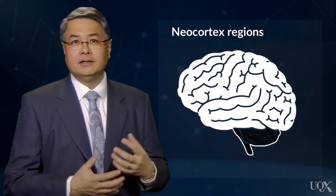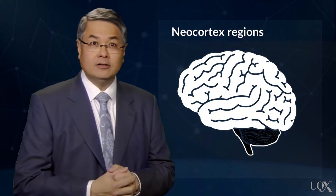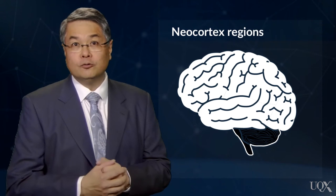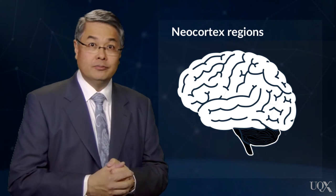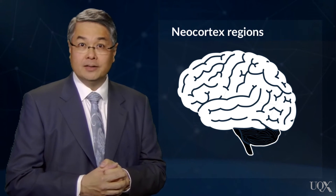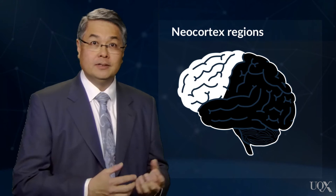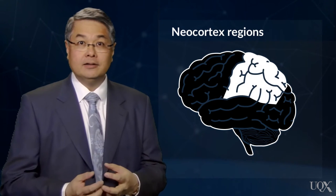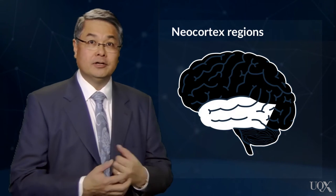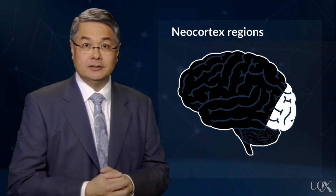The neocortex itself is divided into four regions or lobes across both hemispheres: the frontal lobe, the parietal lobe, the temporal lobe, and the occipital lobe.